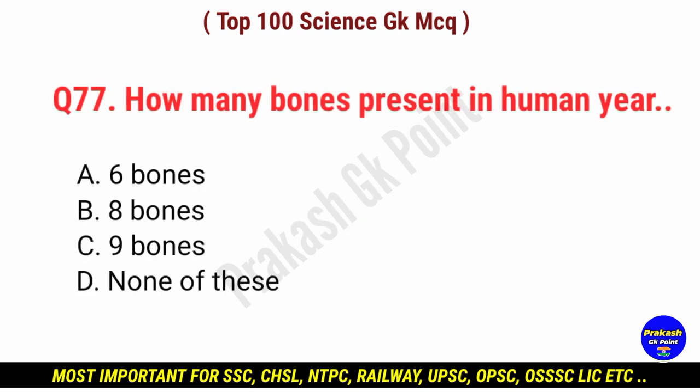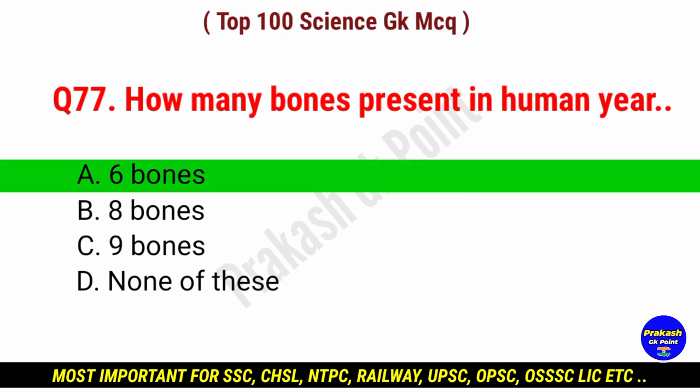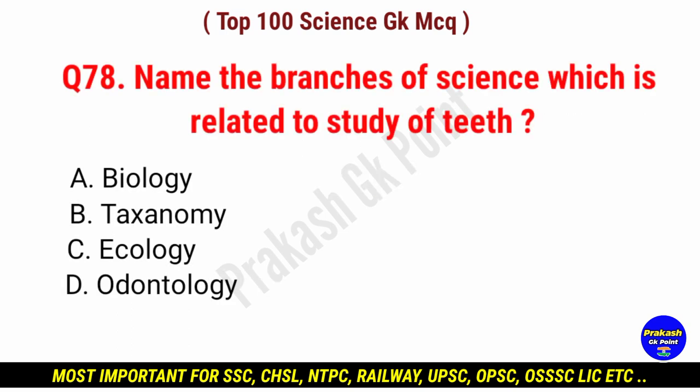How many bones are present in the human ear? Answer: option A, 6 bones.